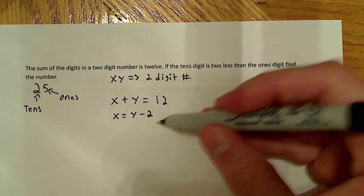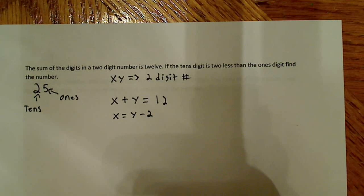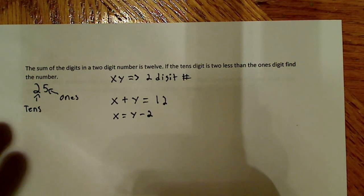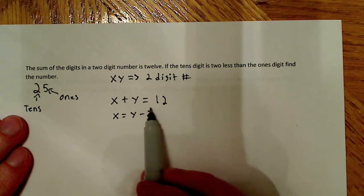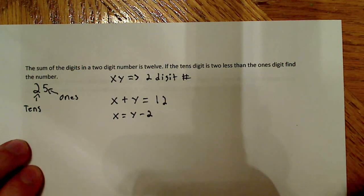Now, what you'll notice here is I have two equations and two unknowns. And with two equations and two unknowns, I have enough information to solve the problem. So what I'm going to do is substitute this in for x, and then solve for y first.